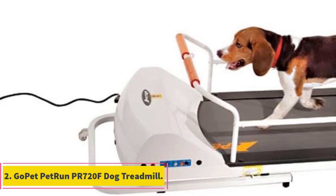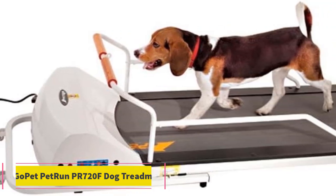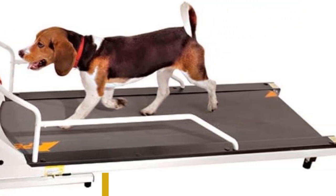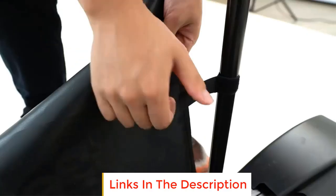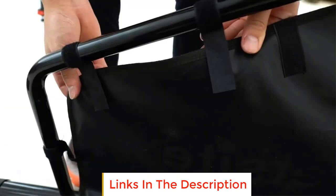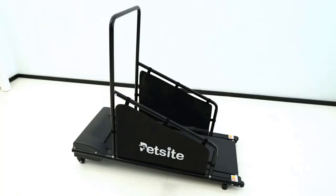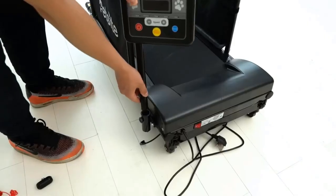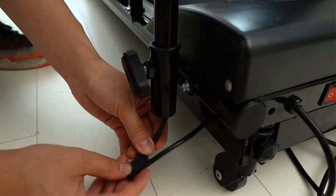Number 2. Go Pet Pet Run PR 720F Dog Treadmill. The Go Pet Pet Run PR 720F Dog Treadmill is an advanced exercise solution designed specifically for dogs weighing up to 132 pounds. With a spacious tread running area of 52 inches in length and 16 inches in width, this treadmill offers ample space for dogs of various sizes to get their daily exercise indoors.